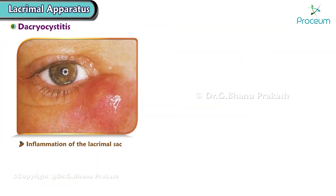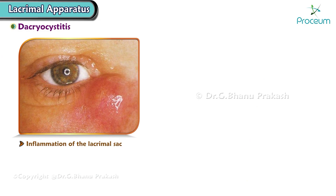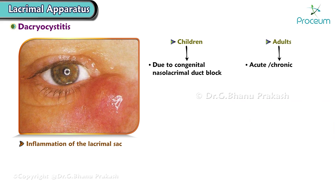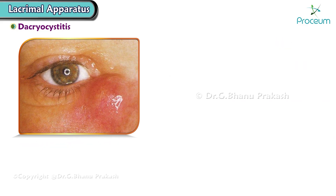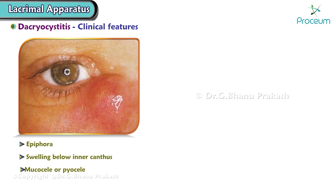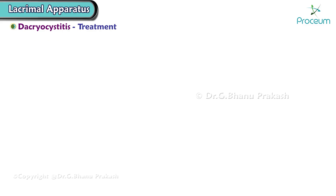Dacryocystitis is inflammation of the lacrimal sac. In children, it is due to congenital nasolacrimal duct block. In adults, it can be acute or chronic — more commonly chronic — caused by stasis and mild infection. Clinical features: epiphora, swelling below the inner canthus, mucocele or pyocele. Diagnosis: regurgitation test. Treatment: antibiotics, NSAIDs, and surgical approach.